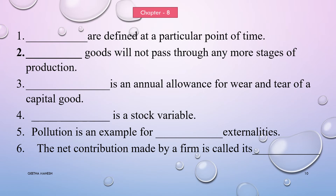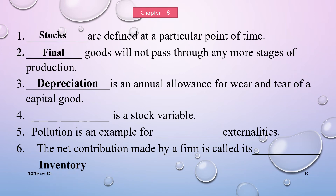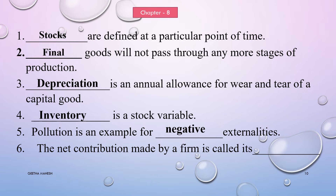A few important fill in the blanks from chapter 8, national income. Stocks are defined at a particular point of time. Final goods will not pass through any more stages of production. Depreciation is an annual allowance for wear and tear of capital goods. Inventory is a stock variable. Pollution is an example of negative externalities. The net contribution made by a firm is called its value added.